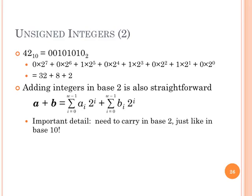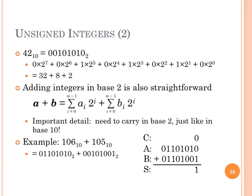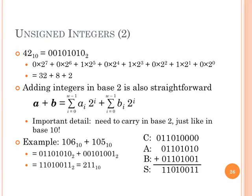Adding integers is also very easy in base 2 because we only have 0s and 1s, but we still need to carry because 1 plus 1 in base 2 is 10. Let's say we're adding 106 and 105. Their base 2 representations are given as A and B. We also have a carry. 0 plus 1 is 1 — carry 0. Then we have 1 plus 1, which is 10 — write 0 and carry the 1. Then 1 plus 1 plus carry 1 is 11. Going through all the bits, we end up with 211, which is certainly the sum of 106 and 105.